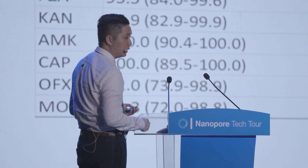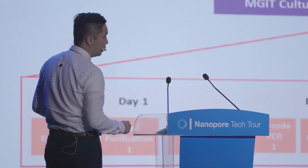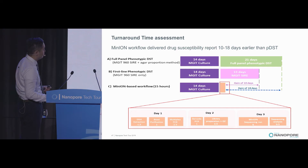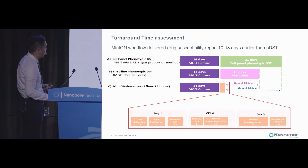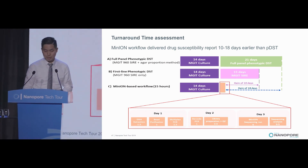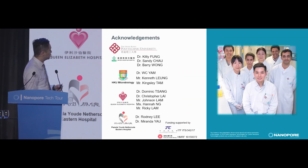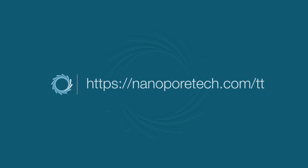We are really adopting this as a standard workflow. Comparing turnaround time, the conventional method takes about a whole month, whereas with the nanopore sequencing workflow we can save at least 10 to 18 days, which is very beneficial for patient management and infection control. That's my talk — thank you for your attention.